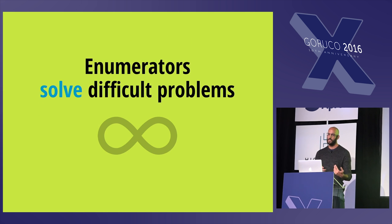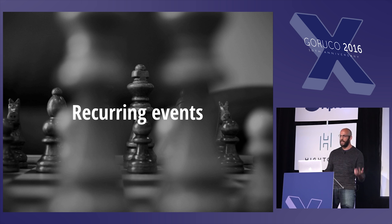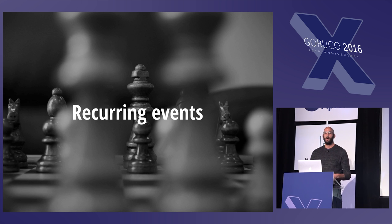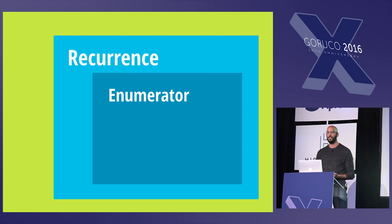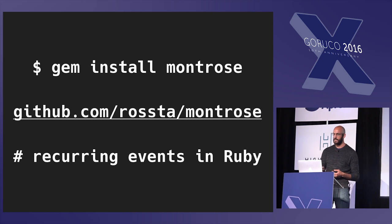Enumerators help us solve difficult problems that would otherwise be difficult to perform eagerly — think streaming API clients, processing large files, or generating infinite sequences like recurring events. All these years later, after absorbing all this stuff about generators and laziness, my hair has migrated from my head to my face. It recently dawned on me we can model event recurrence with an enumerator. I wrote a recurrence abstraction, and at its heart is an enumerator which can lazily yield successive datetimes in a recurrence, with the potential to generate these elements indefinitely. That's right, I enumeratorized it. This is all packaged up in a gem called Montrose — it's for modeling recurring events in Ruby. You can check it out on GitHub or ask me about it later.